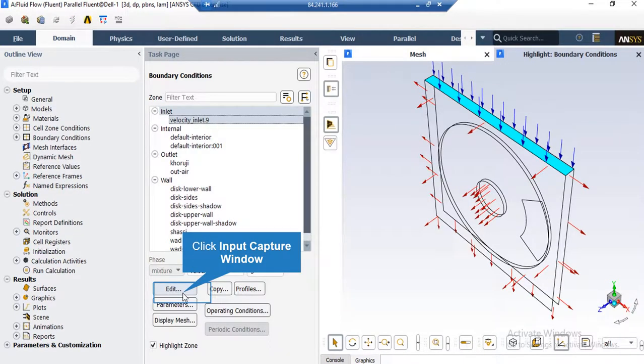After double-clicking on the boundary condition button, in the appeared part, if you click on the inlet boundary, you can see that the type of this boundary is defined to be velocity inlet. By clicking on edit button, a new window will appear in which you can change the settings for this boundary.